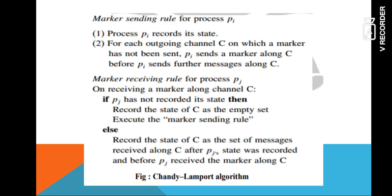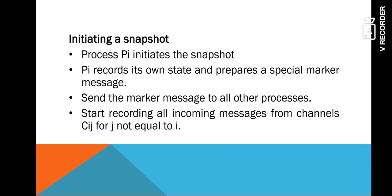If the state has not already been recorded, then the process records its own state as the set of messages received along channel C. After recording all the messages, it records all outgoing and incoming messages as well.